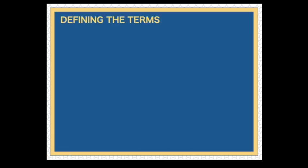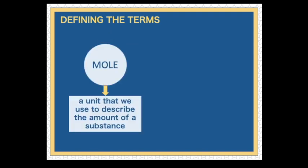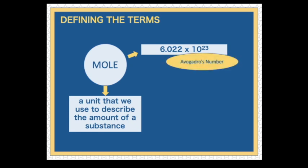We will start by defining the terms. The first term is mole. It is a unit that we use to describe the amount of any substance. It is equal to 6.022 times 10 raised to the 23rd power. And this number is actually called the Avogadro's Number. Since mole represents a really huge amount, mole is usually used in atoms, molecules, and subatomic particles.